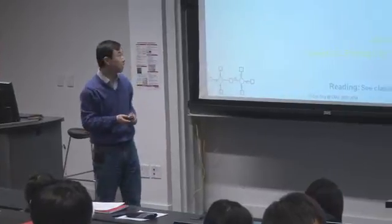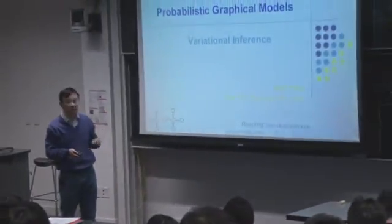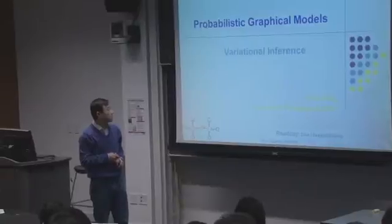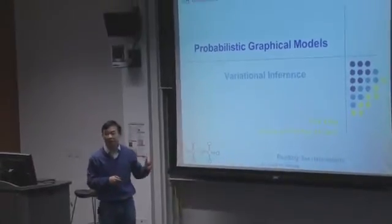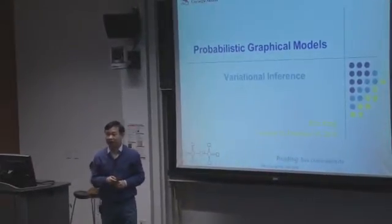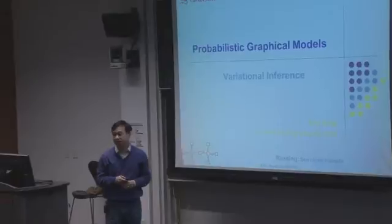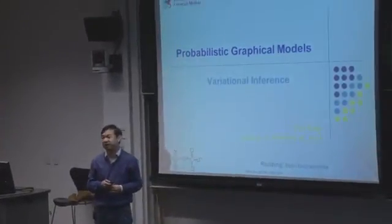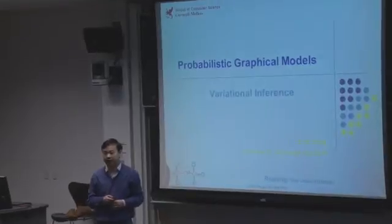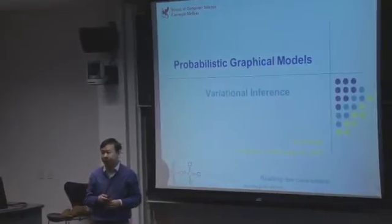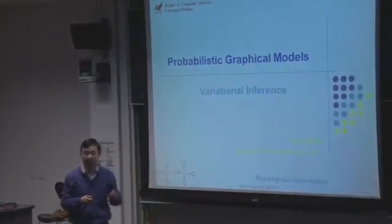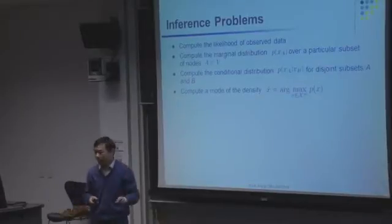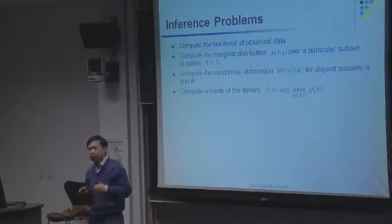Let's talk about approximate inference and a particular type called variational inference. You've probably heard this name very often already. Variational inference is a term that has been used in many ways to refer to many different things. Hopefully in the next few lectures we can make the whole thing clear, so you know exactly what it means.